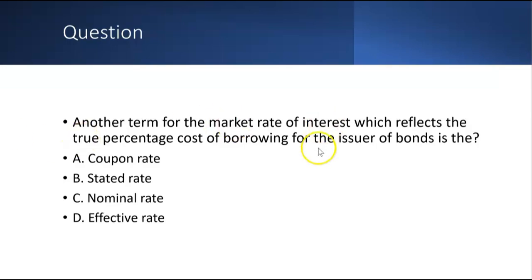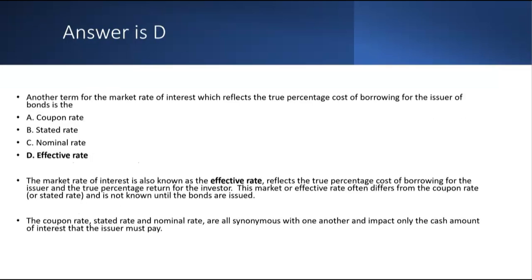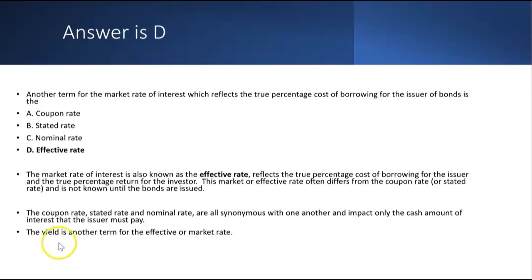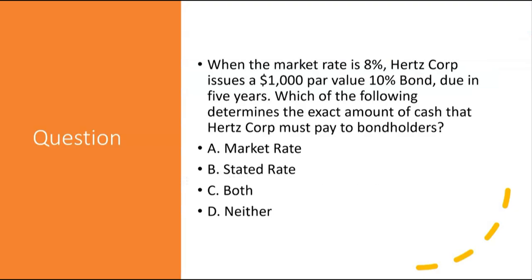Practice question: another term for the market rate of interest, which reflects the true percentage cost of borrowing for the issuer of bonds — is it the coupon rate, stated rate, nominal rate, or effective rate? The answer is D, the effective rate. The market rate of interest is also known as the effective rate and the yield. The coupon rate, stated rate, and nominal rate are all synonymous with one another and impact only the cash amount of interest the issuer must pay.